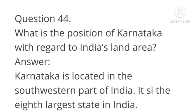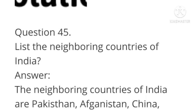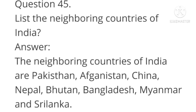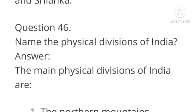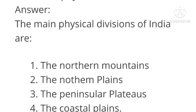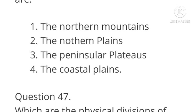Next: List the neighboring countries of India. Answer: The neighboring countries of India are Pakistan, Afghanistan, China, Nepal, Bhutan, Bangladesh, Myanmar, and Sri Lanka. Next: Name the physical divisions of India. Answer: The main physical divisions of India are the northern mountains, northern plains, peninsular plateau, and the coastal plains.